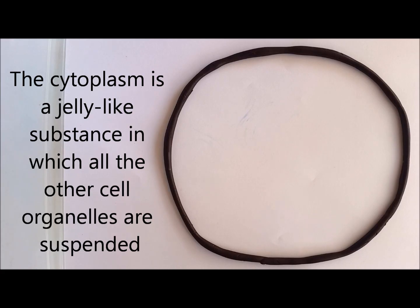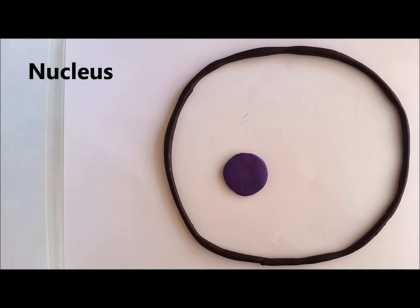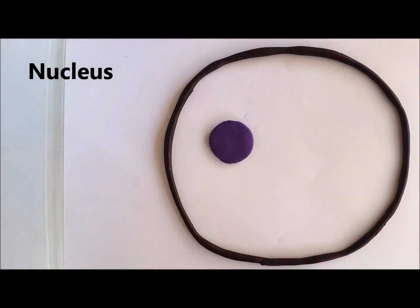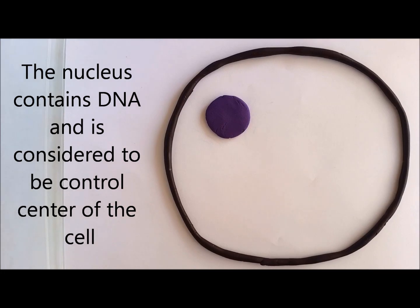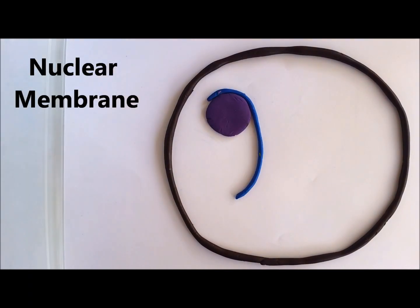Next we have the nucleus. The nucleus contains genetic material called DNA. It is also known as the control center of the cell, because the nucleus is the organelle which tells other organelles what to do.